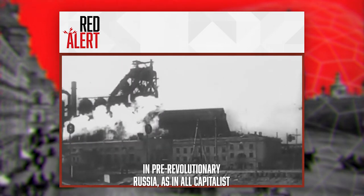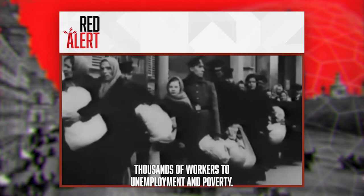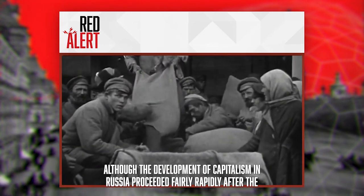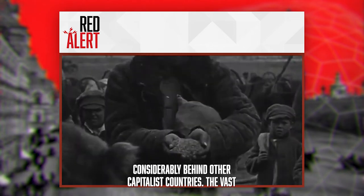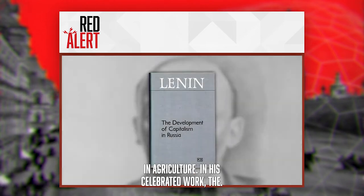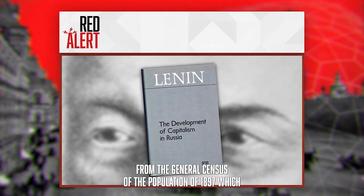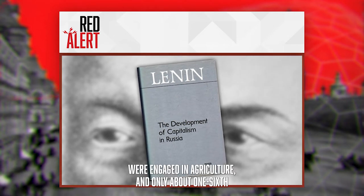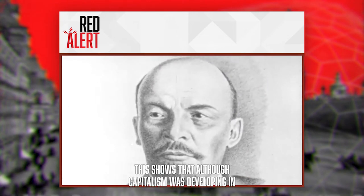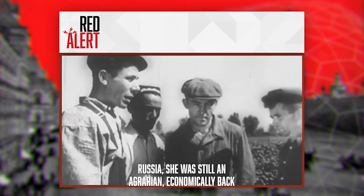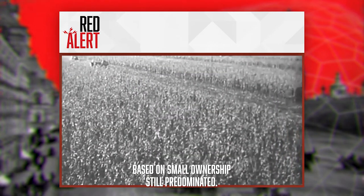In pre-revolutionary Russia, as in all capitalist countries, periods of industrial boom alternated with industrial crises and stagnation, which severely affected the working class and condemned hundreds of thousands of workers to unemployment and poverty. Although the development of capitalism in Russia proceeded fairly rapidly after the abolition of serfdom, nevertheless in economic development Russia lagged considerably behind other capitalist countries. The vast majority of the population was still engaged in agriculture. In his celebrated work, The Development of Capitalism in Russia, Lenin cited significant figures from the general census of the population of 1897, which showed that about five-sixths of the population were engaged in agriculture, and only about one-sixth in large and small industry, trade, on the railways and waterways, in building work, lumbering, and so on. This shows that although capitalism was developing in Russia, she was still an agrarian, economically backward country — a petty bourgeois country in which low-productive individual peasant farming based on small ownership still predominated.